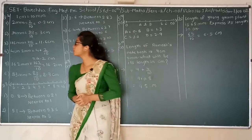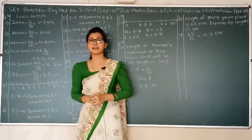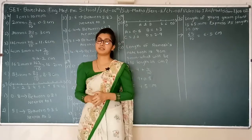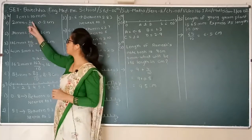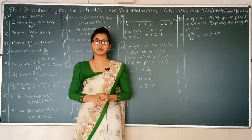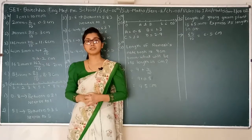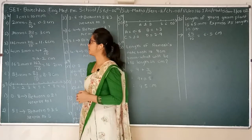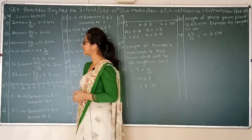We have 2 millimeters. So we will write it as 2 upon 10, because 1 centimeter is equal to 10 millimeters. In the denominator place we have 1 centimeter, so there will be 1 meter with a decimal point. The answer will be 0.2 centimeters.